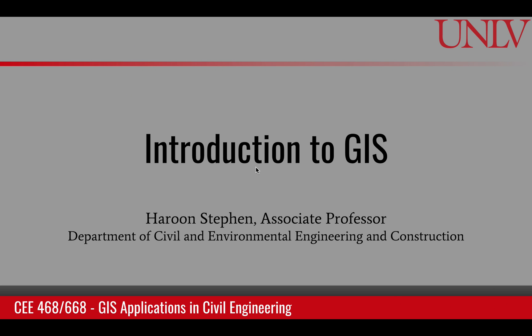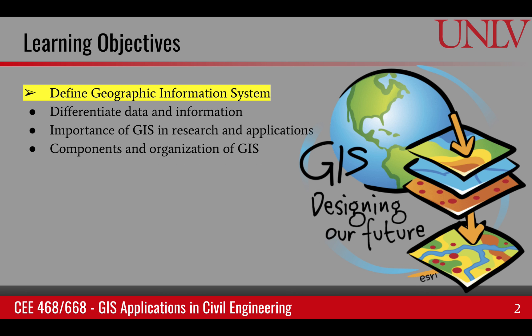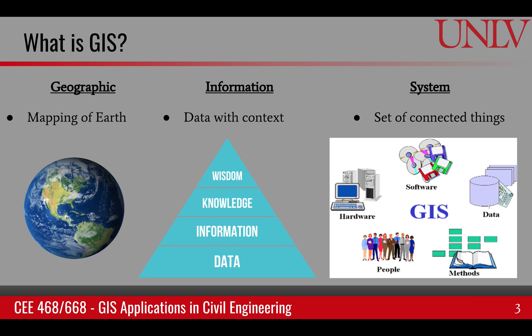This module is about introduction to GIS and it has four learning objectives including the definition of geographic information system, the differentiation between data and information, importance of GIS in research and applications, and the components and organization of GIS. First of all, let's look at the word GIS itself — it stands for geographic information system.